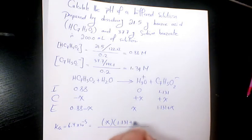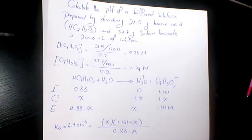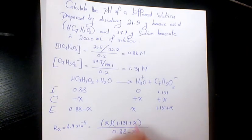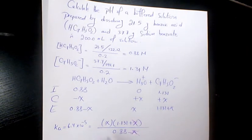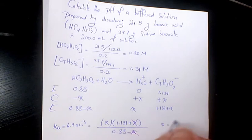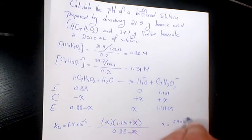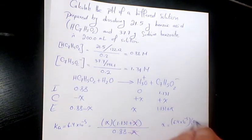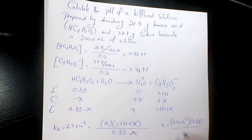These two cancel out and x will be 6.4 times 10 to the power of negative 5 times 0.88 divided by 1.31.